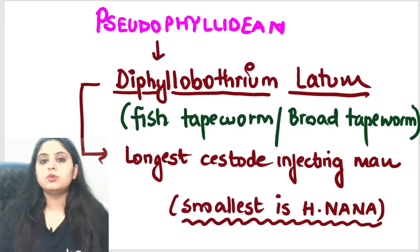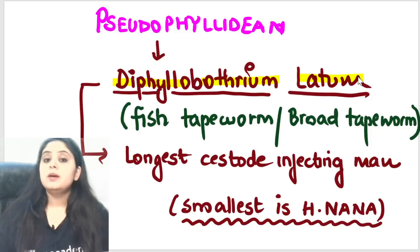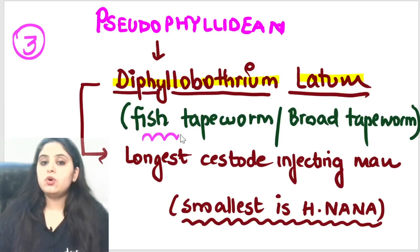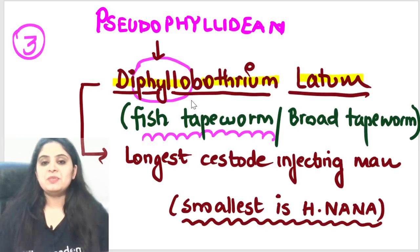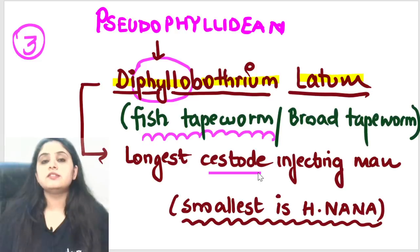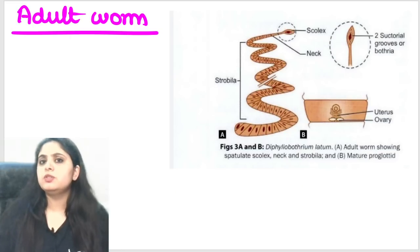I've picked Diphyllobothrium latum to start with because it is the only cestode with three hosts — most others have two, and H. nana has just one. Diphyllobothrium latum is called the fish tapeworm. It is also the longest cestode infecting man. The smallest, which I'll teach tomorrow, is H. nana. Let me show you what the adult worm looks like.